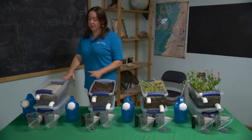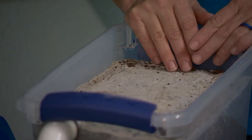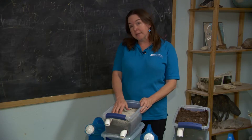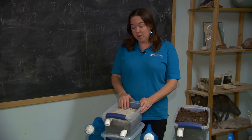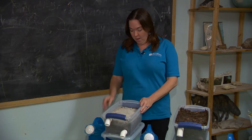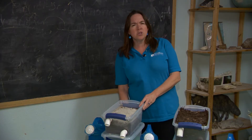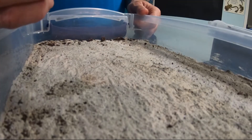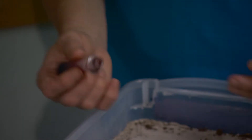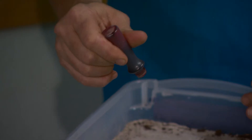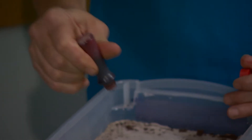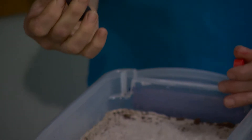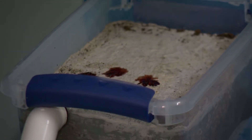Let's start with this concrete. This concrete represents a hard surface like a driveway or a parking lot. What kind of pollution might we find on that kind of surface? We're going to use red food coloring to represent oil and other pollutants that might be on driveways or parking lots.